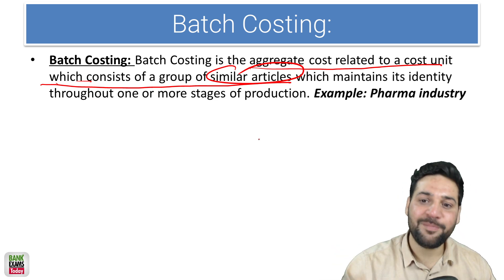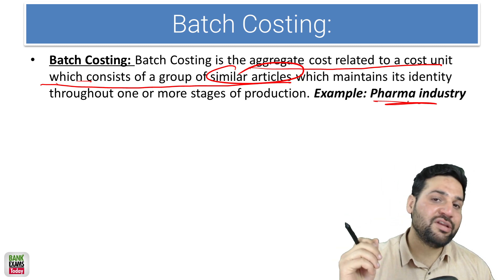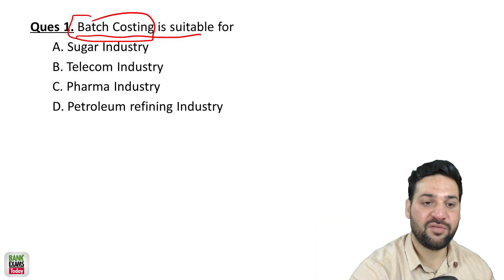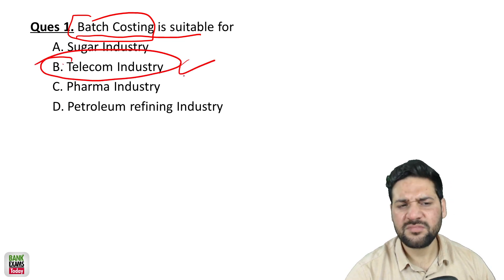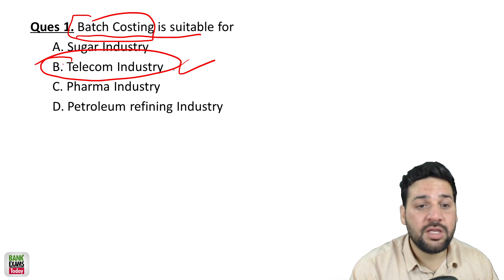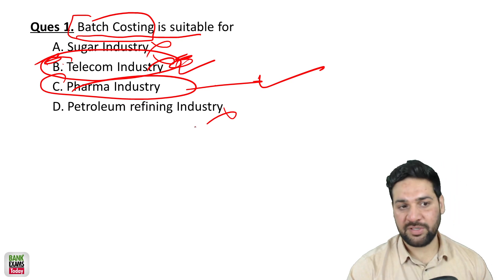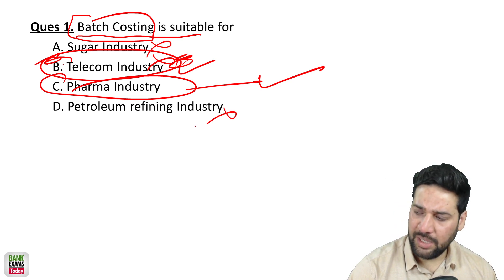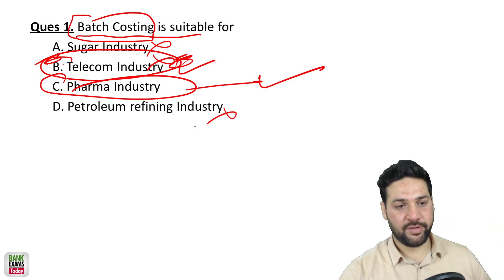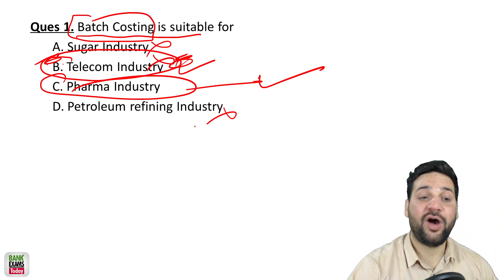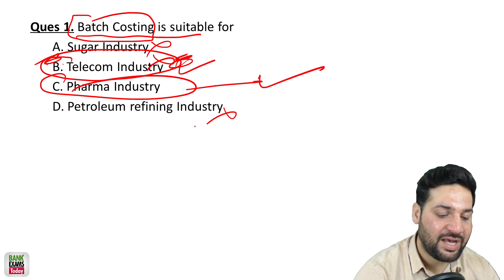In the pharmaceutical industry, you might have noticed a batch number is given — that is because batch costing is used in the pharmaceutical industry, or in packaged food industry. It is not used in telecom, petroleum refining, or the sugar industry. The correct answer is the pharma industry. In the sugar industry, it is loose sugar you find in a general store — it is not packaged — so the correct answer is the pharma industry where you can find batch numbers.